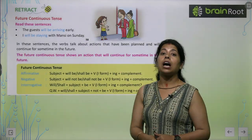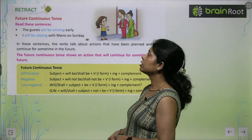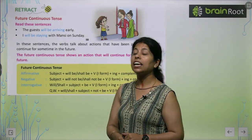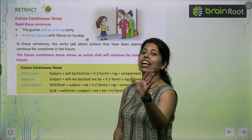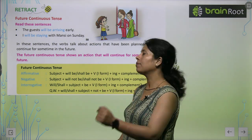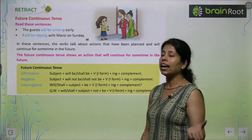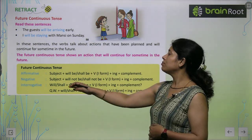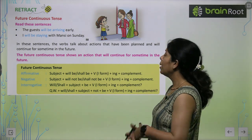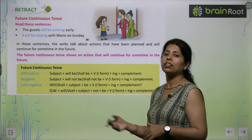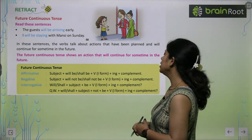Future Continuous Tense. Now let's read these sentences. The rules are the same: subject plus will be or shall be plus first form of verb and -ing. Will be or shall be comes after the subject, followed by the first form of the verb plus -ing, and the complement.